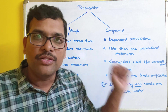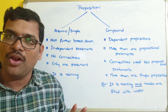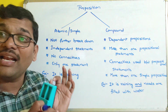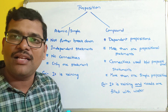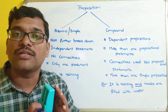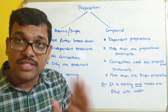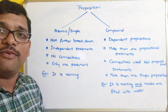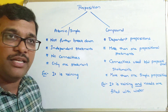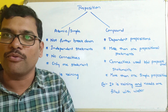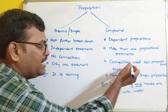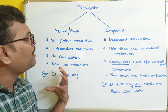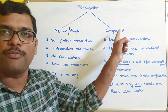So this is all about our propositional logic. Once again, the definition of propositional statement: it is a declarative sentence which results either true or false, but not both. Such a sentence we call a propositional statement. These are of two types: atomic and compound. In our next session, we will see what are the different connectives which connect multiple simple propositional statements to form compound propositions.